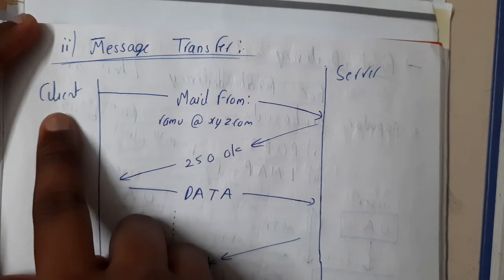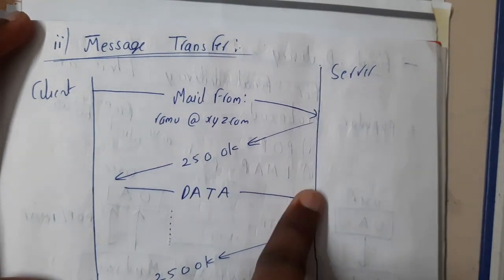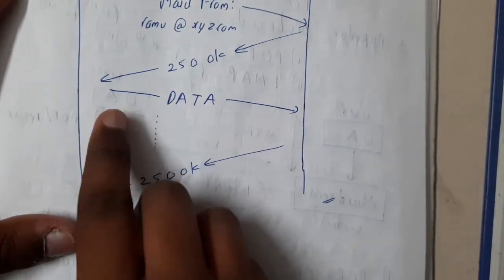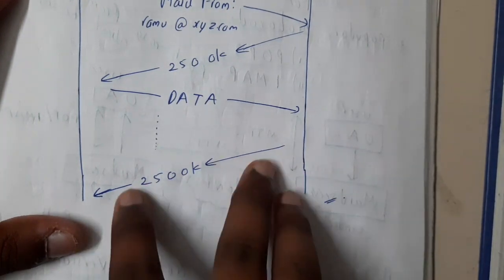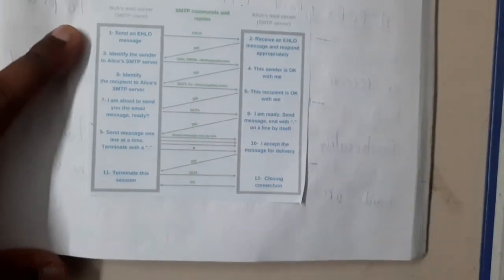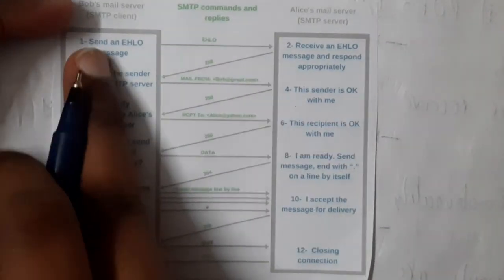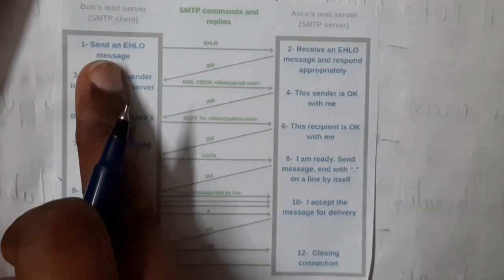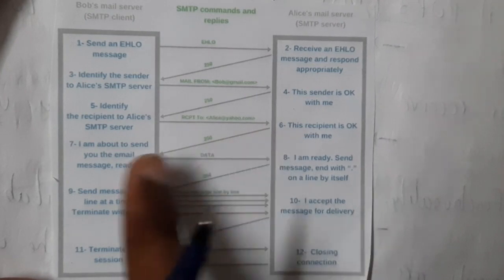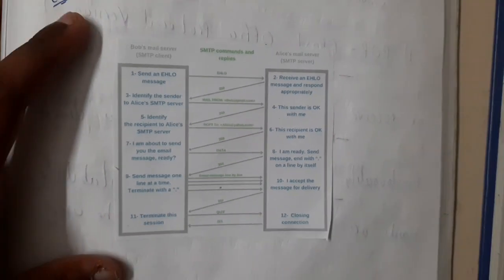For message transfer, the client sends MAIL FROM with his details — for example, from Ramu. Then RCPT TO specifies Rani as the recipient, and she responds 250 OK, confirming she is ready to receive. Ramu then sends the DATA, and Rani continuously acknowledges receipt. Once the full transfer is complete, the connection is terminated. A diagram here shows the client initiating with HELLO, the server acknowledging with 250, sender and receiver email IDs confirmed, data sent, and finally QUIT with the server responding 221.